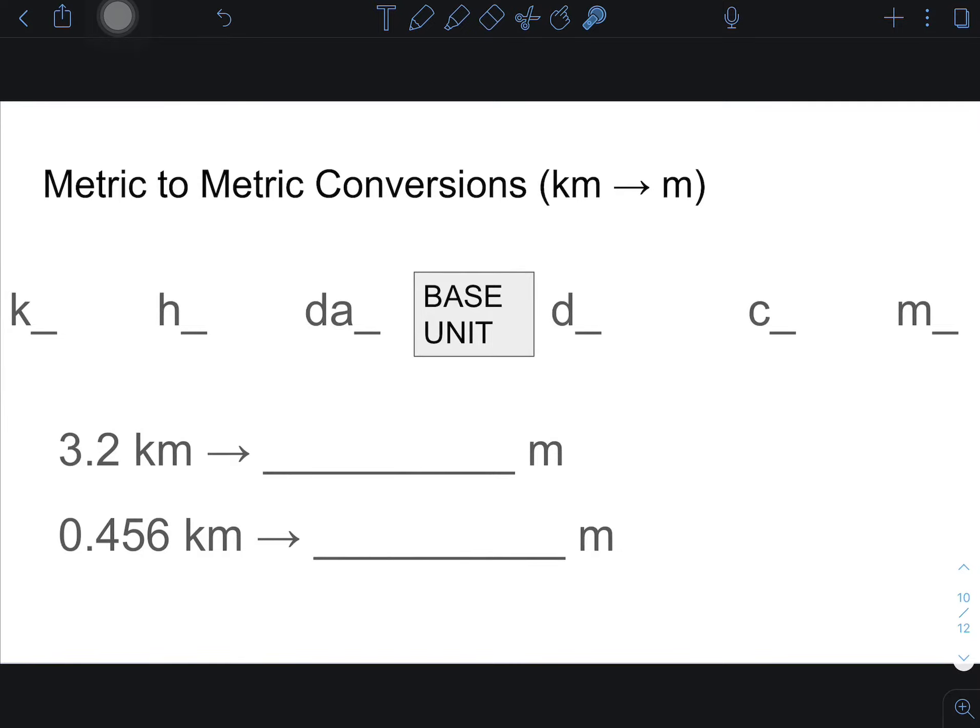Base unit to kilometers. Now we're going the opposite way. We're going one, two, three to the right. So if we go one, two, three, we'd go 3,200 because it's one, two, three. Or if it was here, it's one, two, three. So in this case, it'd be 456 meters. We're just simply moving it.